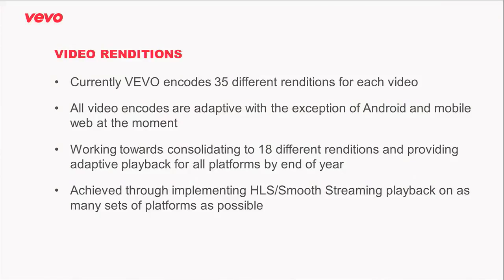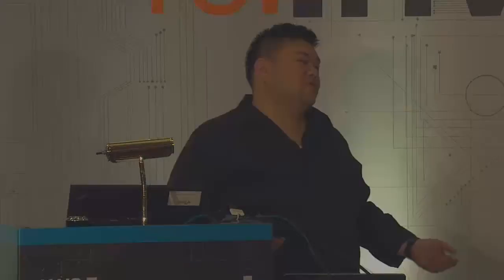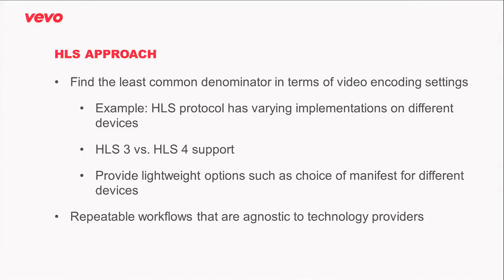At current, we have about 35 different video renditions for each of our video assets. With close to 100,000 assets, that's about over 3 million objects — a lot of video content to manage. All of our video streaming is done with adaptive bit rates, except on Android and mobile. What we're really trying to work towards from an engineering perspective is consolidating the number of renditions we have to pump out for each video, using adaptive bit rate protocols like HLS and smooth streaming to deliver video content on multiple devices and reuse the same video output as many times as possible.